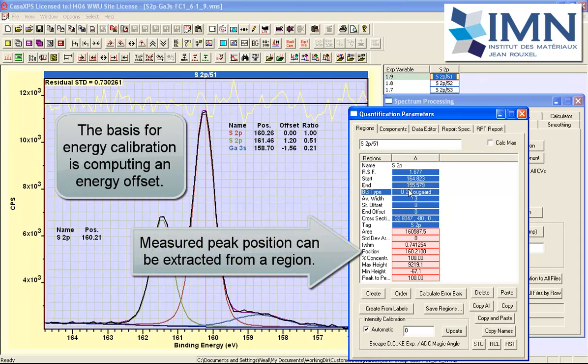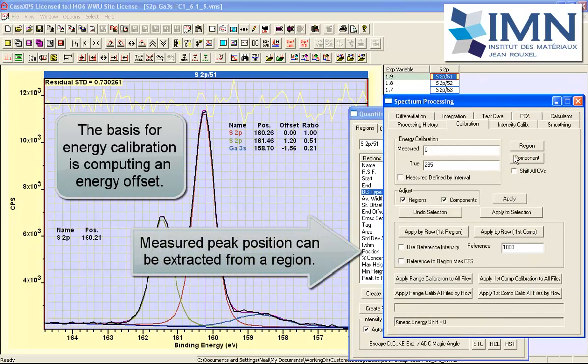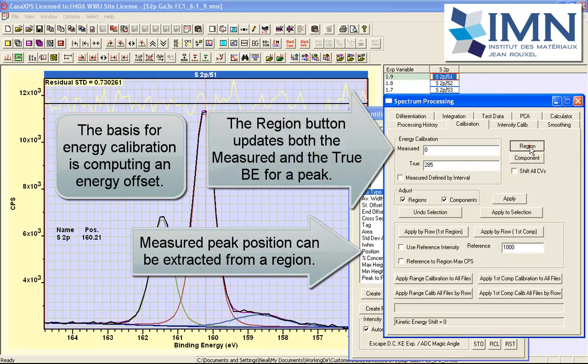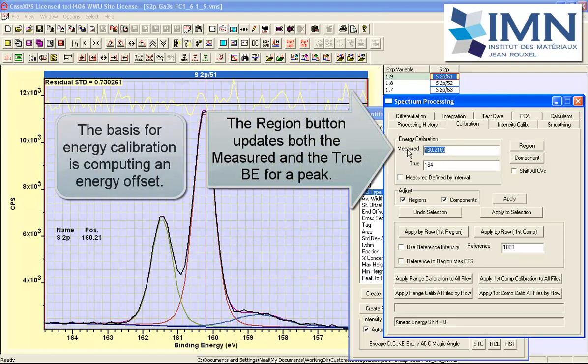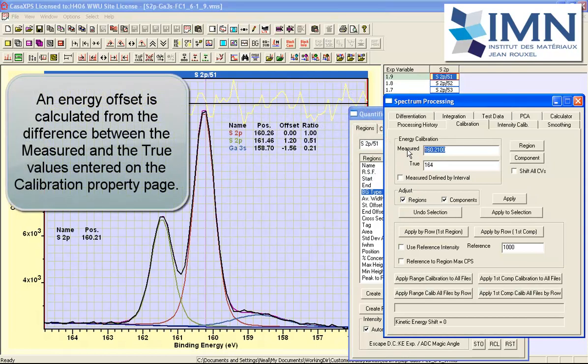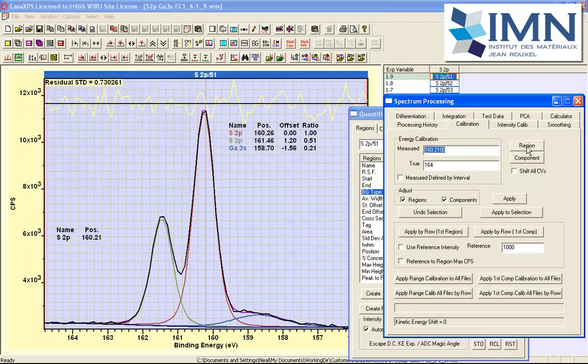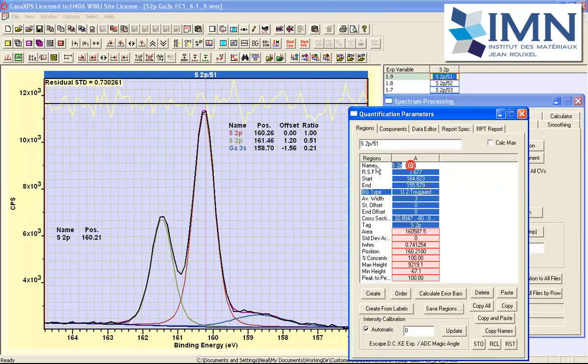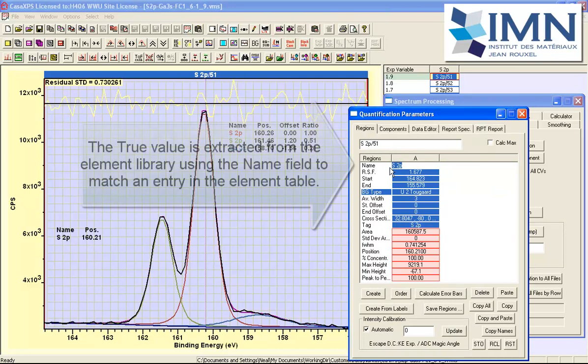Once this region is selected then there is a button here that will allow us to pull in information from that region. That is to say the selected region. If there were more than one region on these data then the selected one would be the one that is acted on by this regions button. And the value has come in from the region. The true value has come in from the information gathered from the element library based on the name field in this region that was selected.